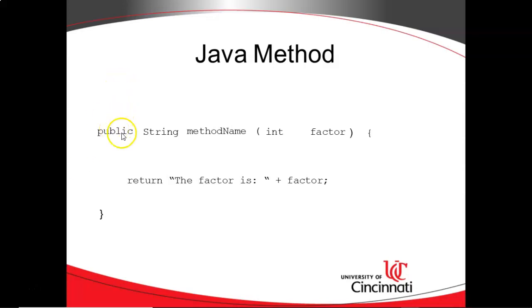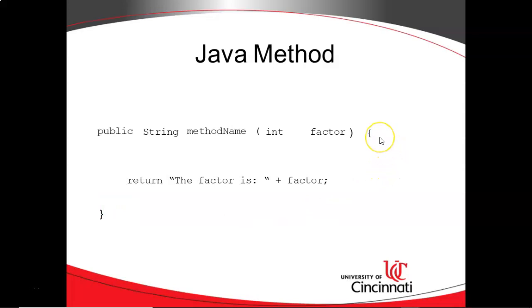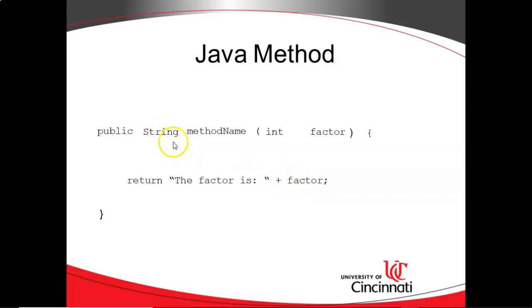We'll typically have an access modifier, a return type, a method name, and then in parentheses we will have any parameters that are passed into the method. Here's a parameter variable named factor of type int. Now we have open curly and close curly, and that's where the work of the method happens. So we're saying return the factor is plus factor. In Java, it's going to take this as a string, treat the plus as a concatenation operator, and then concatenate the factor on the end and return that string.